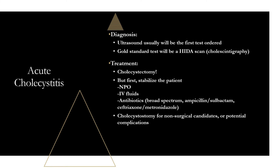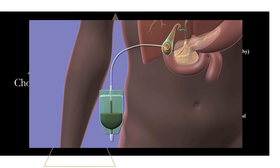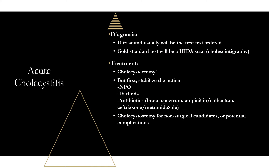Another option if you're unable to do a cholecystectomy — for non-surgical candidates or when there are potential complications like suspected gangrene or perforation — is a cholecystostomy. This is essentially a stoma created into the gallbladder using a thin, hollow, flexible tube placed into the gallbladder to drain the infected bile out. This is used in the meantime until the patient is stable, and then an elective cholecystectomy can be done later. Ultimately, cholecystectomy is your treatment, but in sicker patients there are steps that come before.